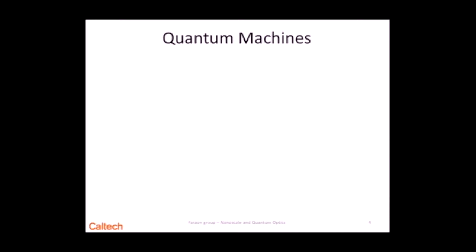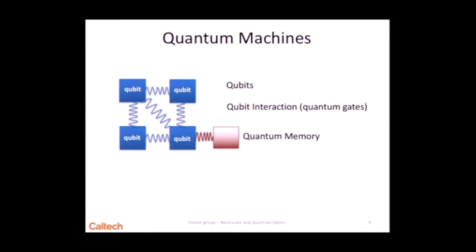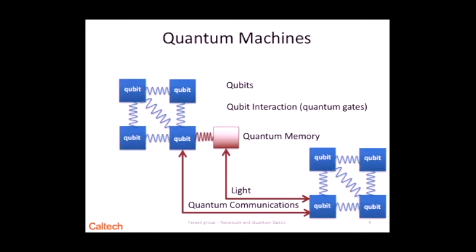I'm part of a community of people who want to build quantum machines, and generally these quantum machines are made out of devices that we call qubits. These are like the transistors in a regular computer, and these qubits interact, and basically we can realize quantum gates. These devices also have what we call quantum memories, which are similar to the RAM in a regular computer. We're also dreaming about making these quantum machines and interconnecting them with each other via optical channels, in the same way you have computers interconnected via optical fibers over the internet.